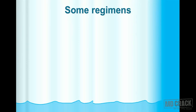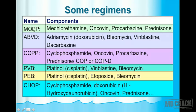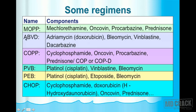Now let's explore the various anti-cancer regimens. MOPP: M = mechlorethamine, O = oncovin (a vinca alkaloid), P = procarbazine, P = prednisone. In these regimens, 'O' usually stands for oncovin (vinca alkaloid), and the last 'P' usually stands for prednisone. ABVD regimen: A = adriamycin (doxorubicin).